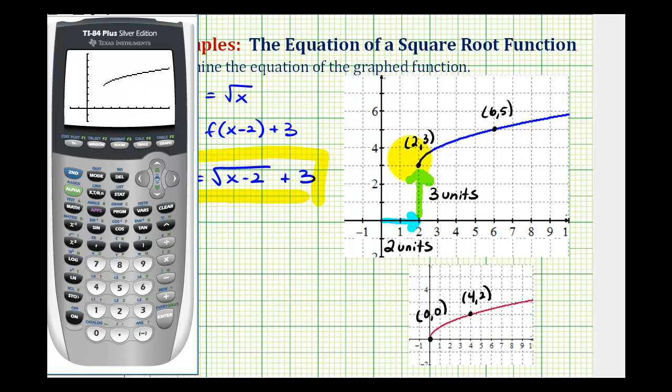Let's also verify that these two points are on this function. So we'll press second graph. And notice how this table is set on ask. Let's change it to automatic. So we'll press second window for table set. We'll change this to automatic. So we'll go down to this row, highlight auto, and press enter.